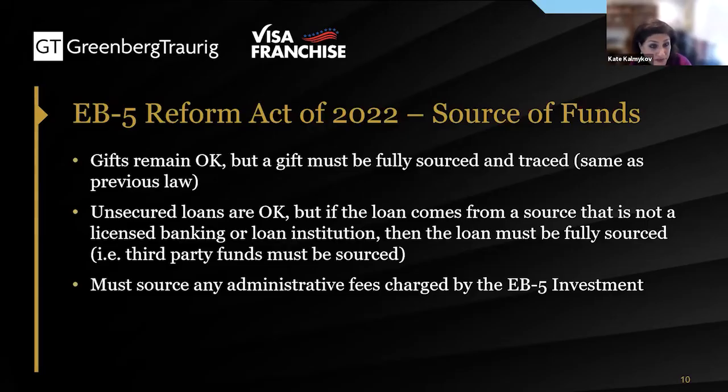Many projects charge administrative fees — these are out-of-pocket costs incurred in preparing an EB-5 offering. There are different documents that need to be prepared, with accountants, lawyers, and franchise brokers involved — a whole team needed to put together an EB-5 offering. Those costs are often passed on in the form of administrative fees. Previously we didn't have to explain where they came from, but we always did because we would get the questions. Now USCIS has made it law — you have to explain it.